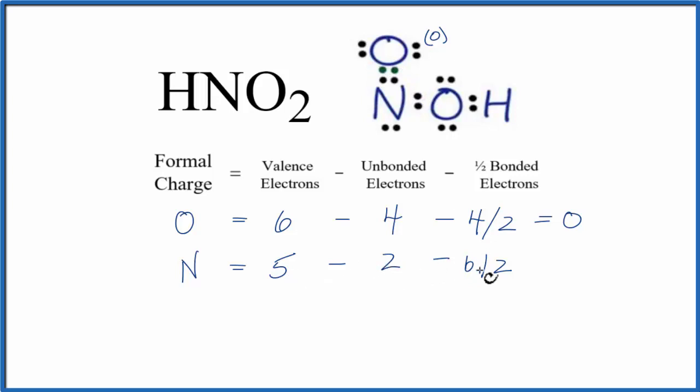So five minus two is three, minus three, that's zero. So the formal charge for this nitrogen here is zero.